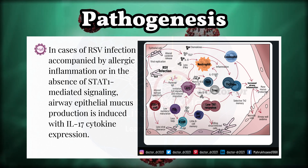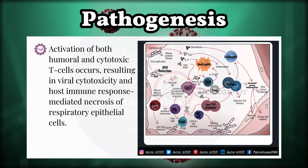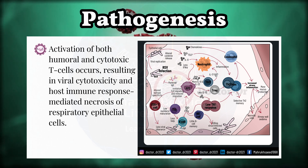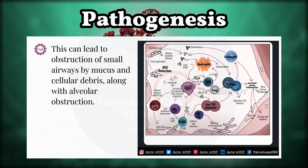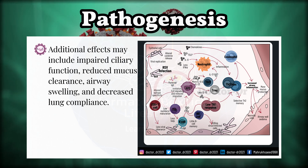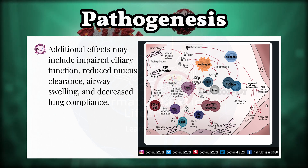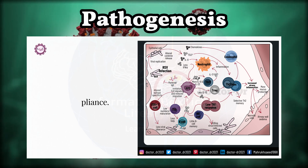RSV infection post-immunization with formalin-inactivated RSV (FIRSV) or the RSV G glycoprotein triggers an immune response skewed towards type 2 cytokines, often leading to lung eosinophilia and increased airway mucus production. In cases of RSV infection accompanied by allergic inflammation, or in the absence of STAT-1-mediated signaling, airway epithelial mucus production is induced with interleukin-17 cytokine expression. Activation of both humoral and cytotoxic T cells results in viral cytotoxicity and immune response-mediated necrosis of respiratory epithelial cells, leading to obstruction of small airways by mucus and cellular debris, along with alveolar obstruction.